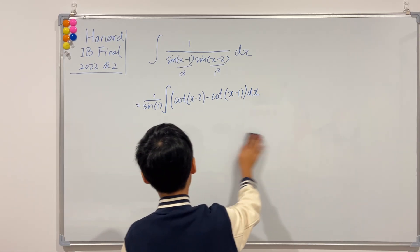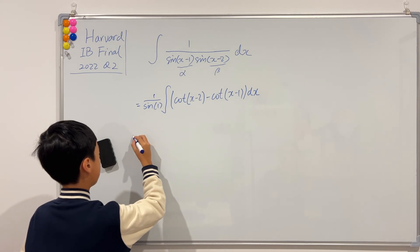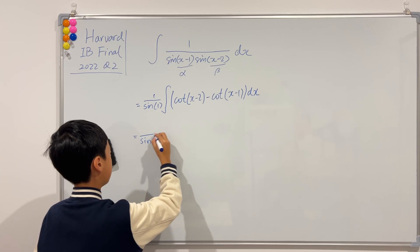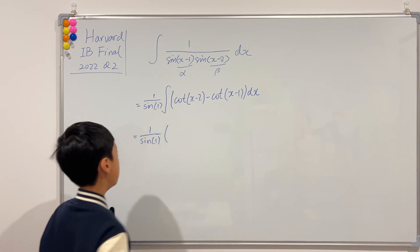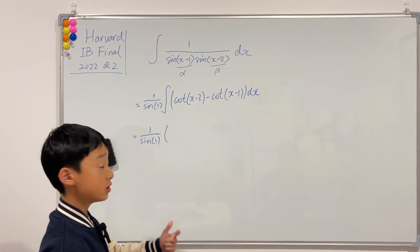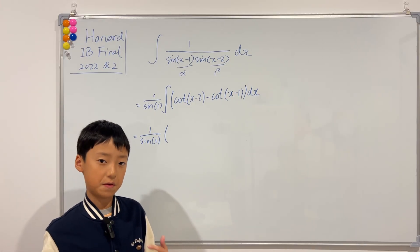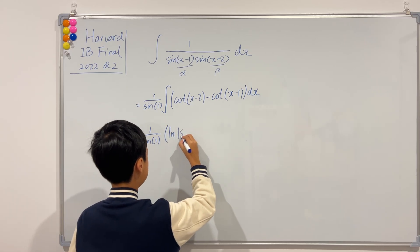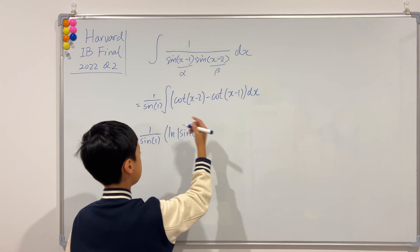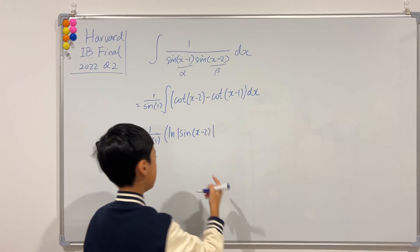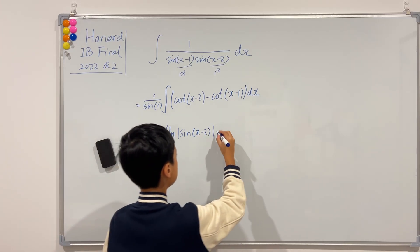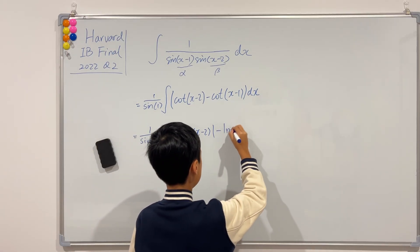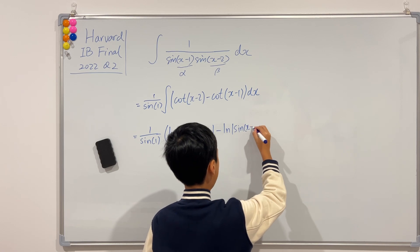Now, this is very simple. This will be equal to this. And then, cotangent is cosine over sine. And cosine is the derivative of sine. So, isn't it just ln of sine of x minus 2? Yes. And then, we have to subtract it by, using the same logic, it will be ln sine of x minus 1.